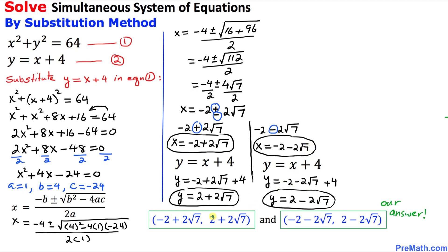Here is our final answer with two sets of ordered pairs. The first ordered pair is (−2 + 2√7, 2 + 2√7) and the second is (−2 − 2√7, 2 − 2√7). Thanks for watching, and please don't forget to subscribe to my channel for more exciting videos.